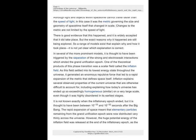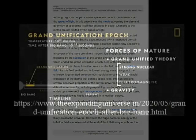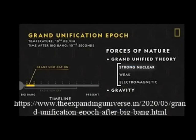There is good evidence that this happened, and it is widely accepted that it did take place. But the exact reasons why it happened are still being explored. In several of the more prominent models, it is thought to have been triggered by the separation of the strong and electroweak interactions which ended the grand unification epoch. One of the theoretical products of this phase transition was a scalar field called the inflaton field. As this field settled into its lowest energy state throughout the universe, it generated an enormous repulsive force that led to a rapid expansion of the metric that defines space itself.